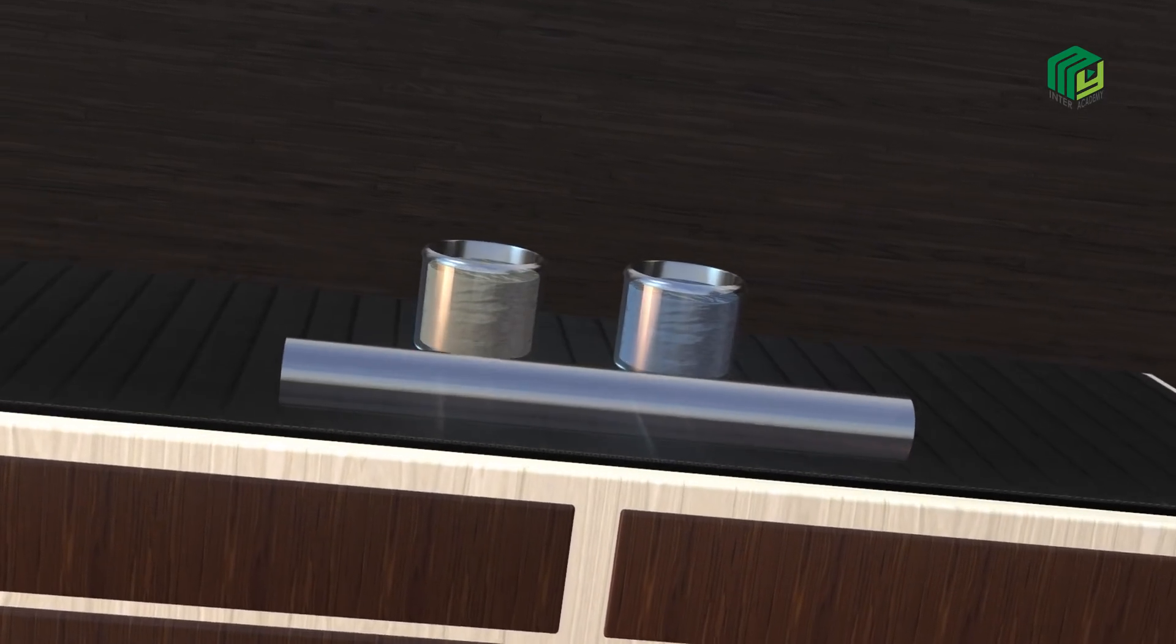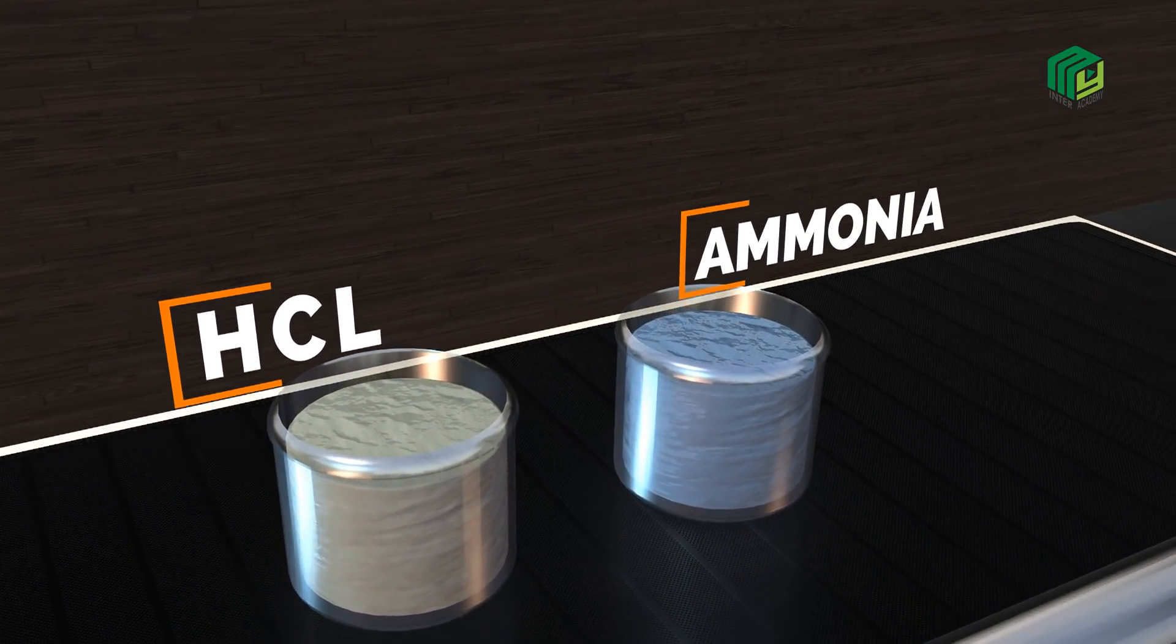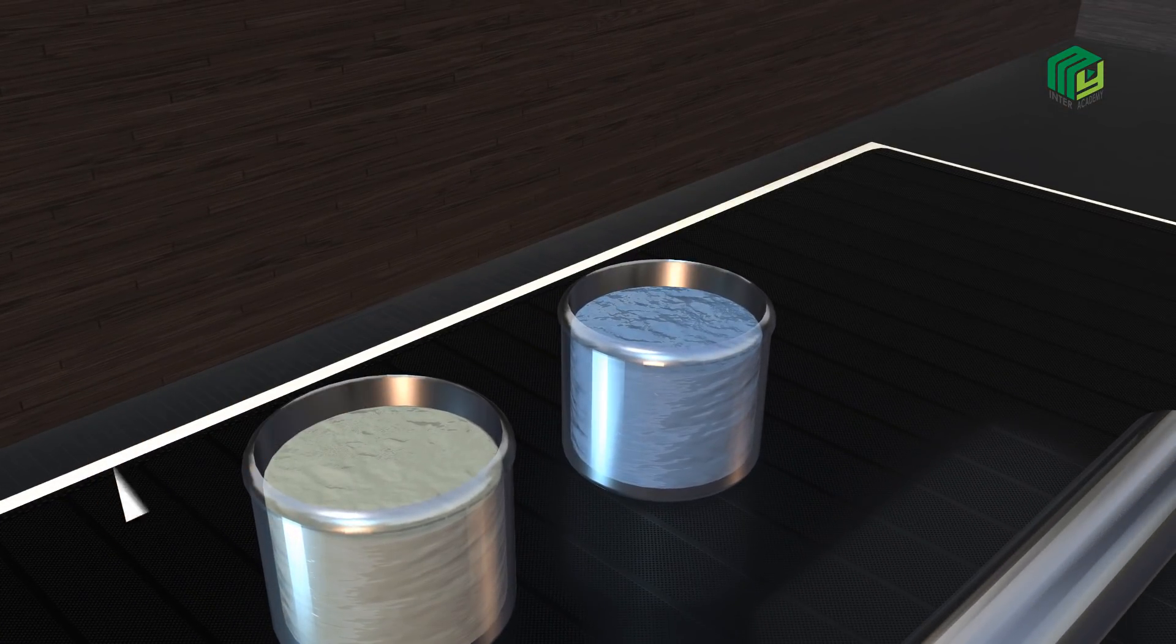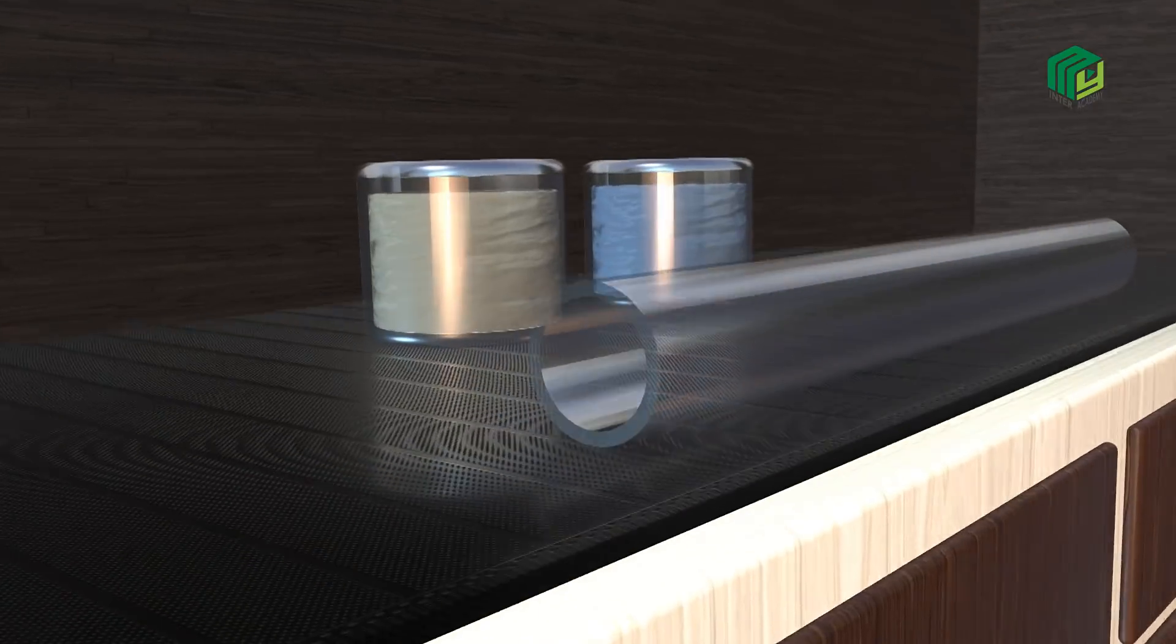In this experiment, ammonia and hydrochloric acid molecules diffuse and form ammonium chloride. Consider a test tube with both ends open.